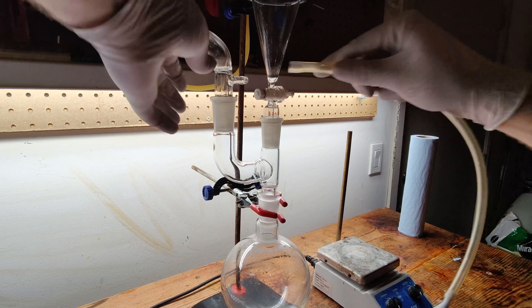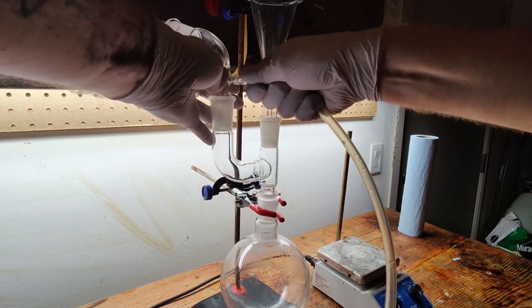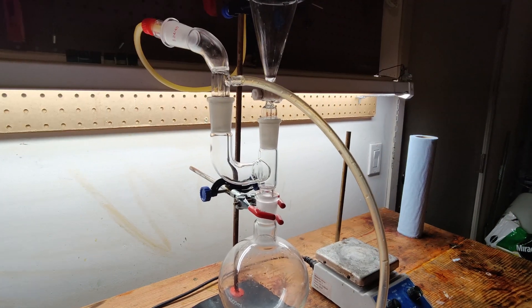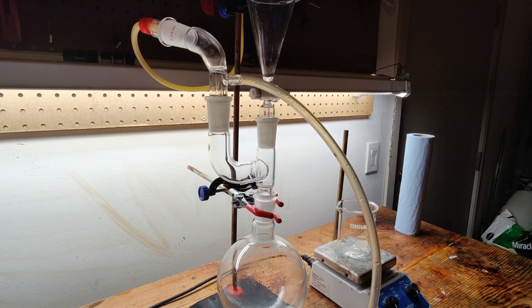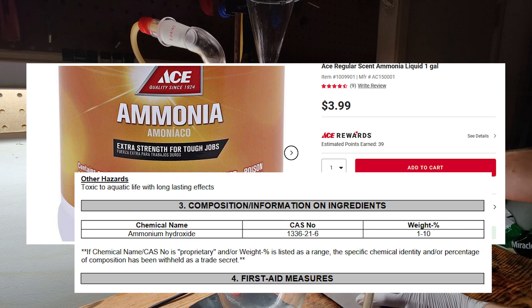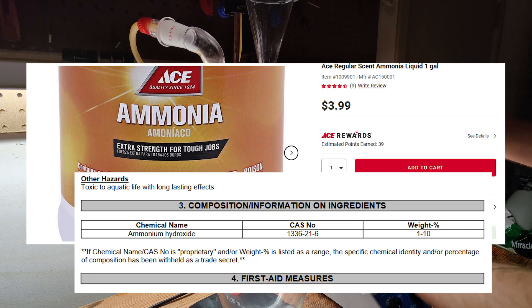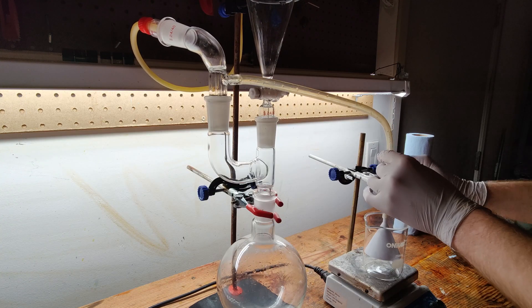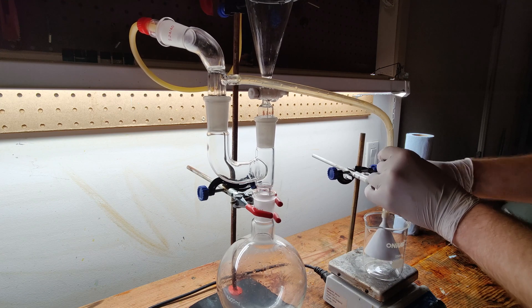I've tried this experiment a few times in the past, and each time the yield was pretty bad. This is probably because I wasn't using strong enough ammonia. Despite what the labels may imply, hardware store ammonia is relatively dilute, and usually only contains between 4-6% ammonium hydroxide by mass. The ammonia solution I will be making will be closer to 25-30%.